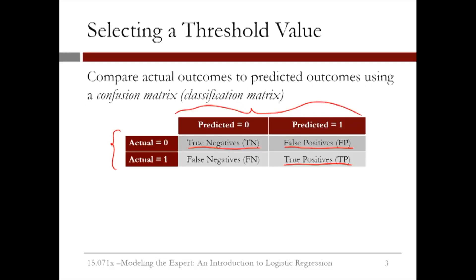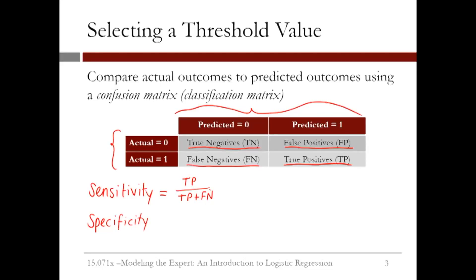The false positives, or FP, are the number of data points for which we predict poor care but they're actually good care. And the false negatives, or FN, are the number of data points for which we predict good care but they're actually poor care. We can compute two outcome measures that help us determine what types of errors we are making. They're called sensitivity and specificity. Sensitivity is equal to the true positives divided by the true positives plus the false negatives, and measures the percentage of actual poor care cases that we classify correctly. This is often called the true positive rate. Specificity is equal to the true negatives divided by the true negatives plus the false positives, and measures the percentage of actual good care cases that we classify correctly. This is often called the true negative rate.